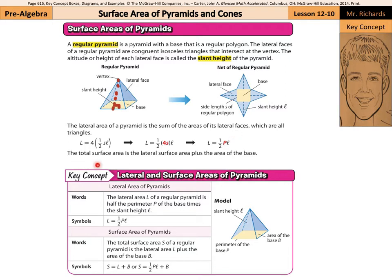The total surface area is the lateral surface area plus the area of the base — and there is just one base on a pyramid. So the lateral area L of a regular pyramid equals one-half the perimeter of the base times the slant height, giving us the lateral faces. For total surface area, that's the lateral area — the four triangles — plus the area of the one base.